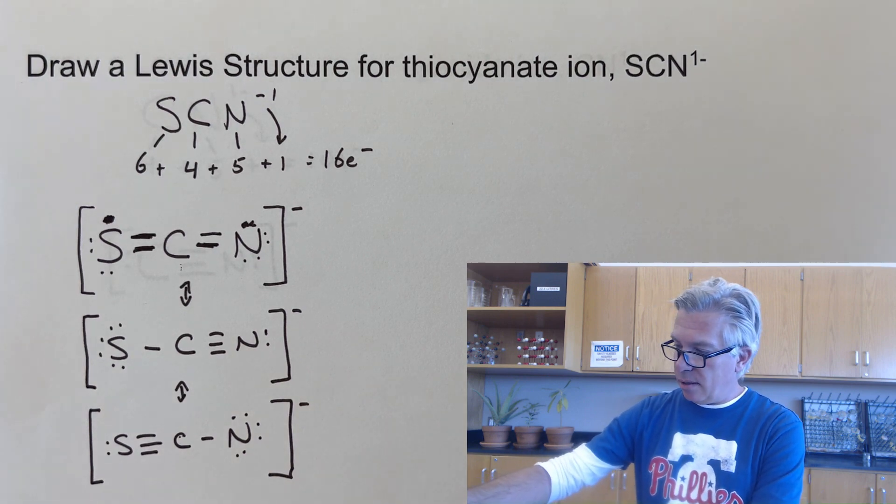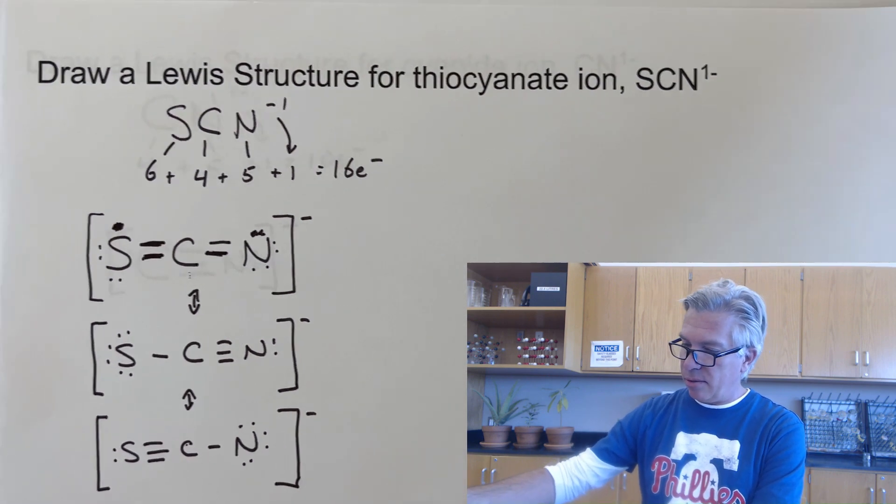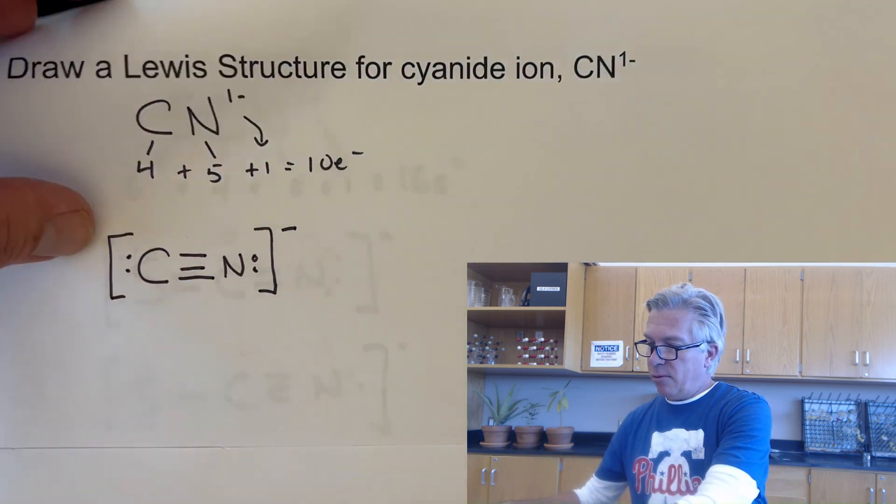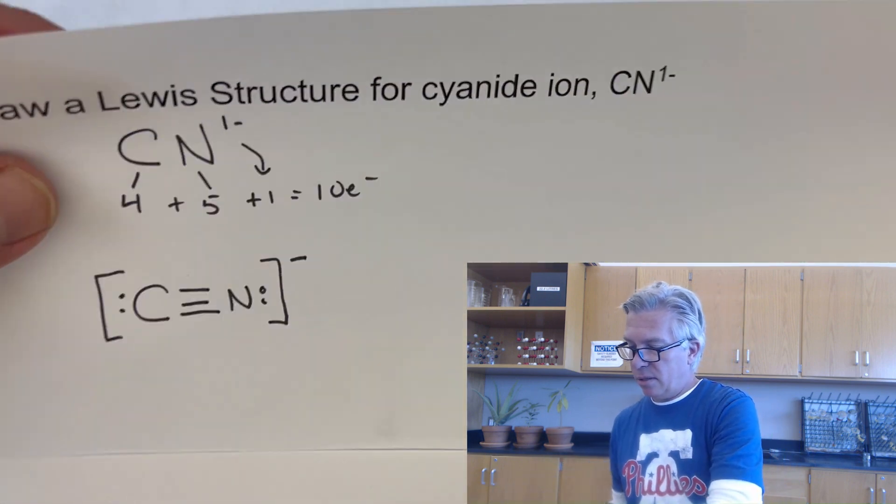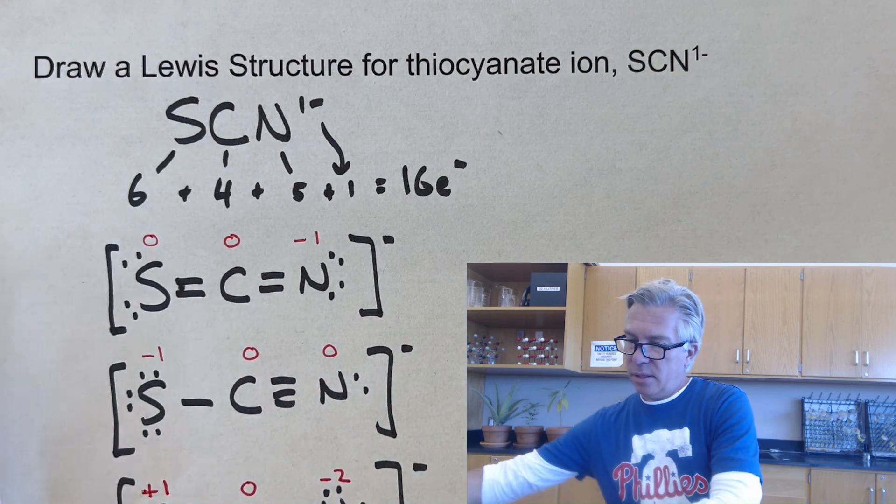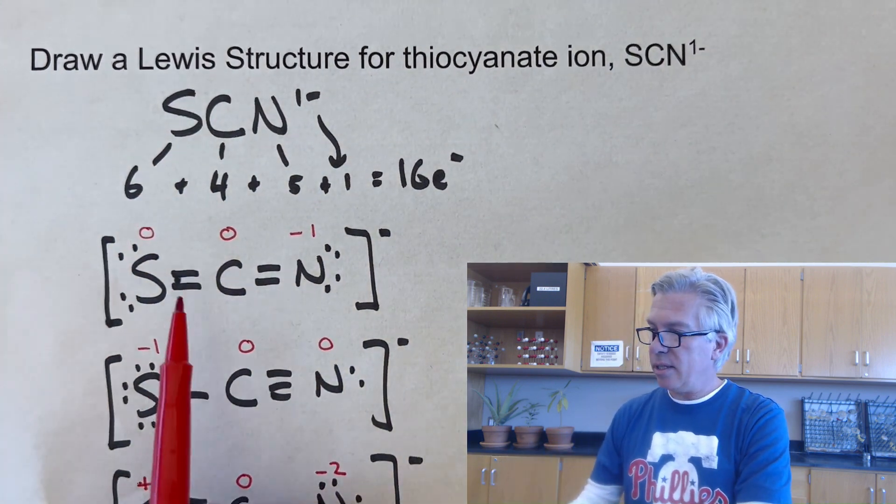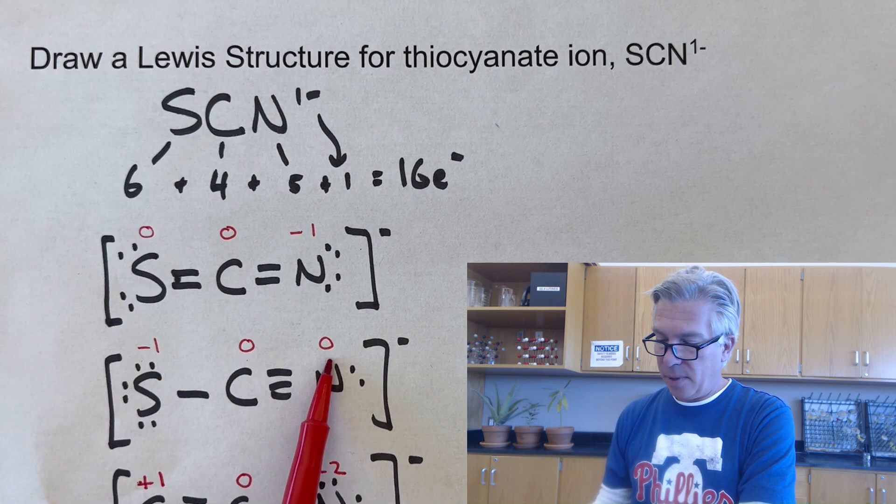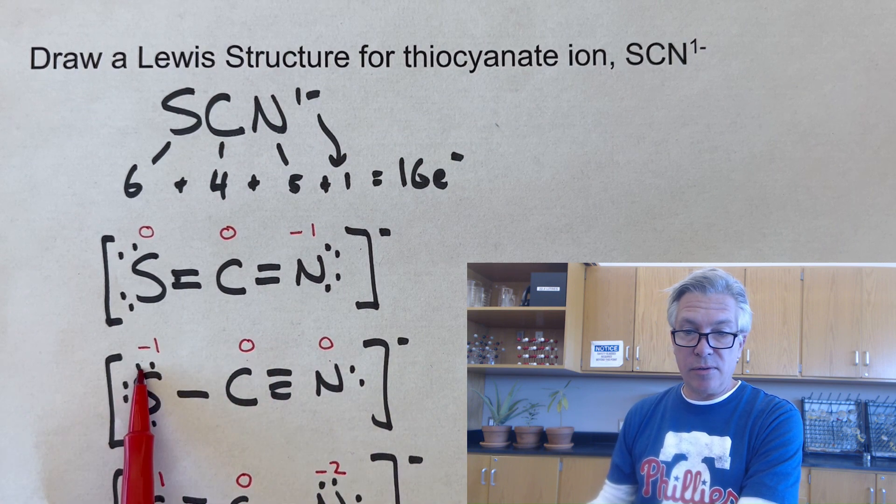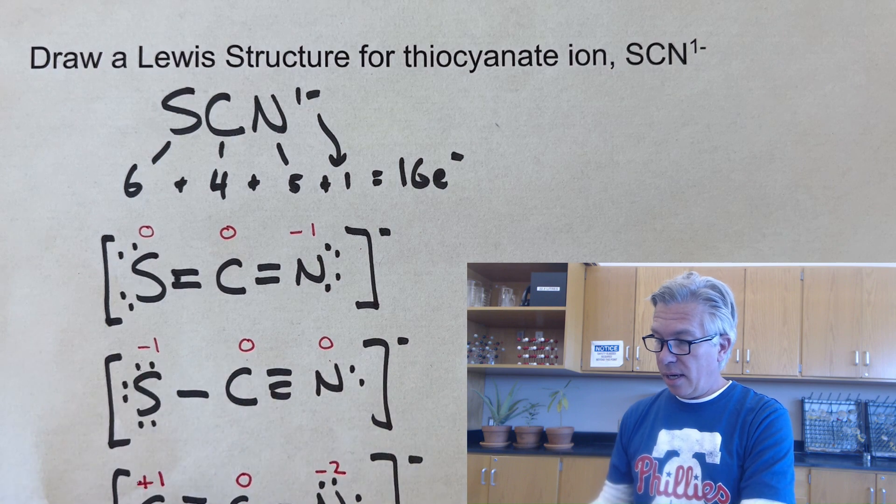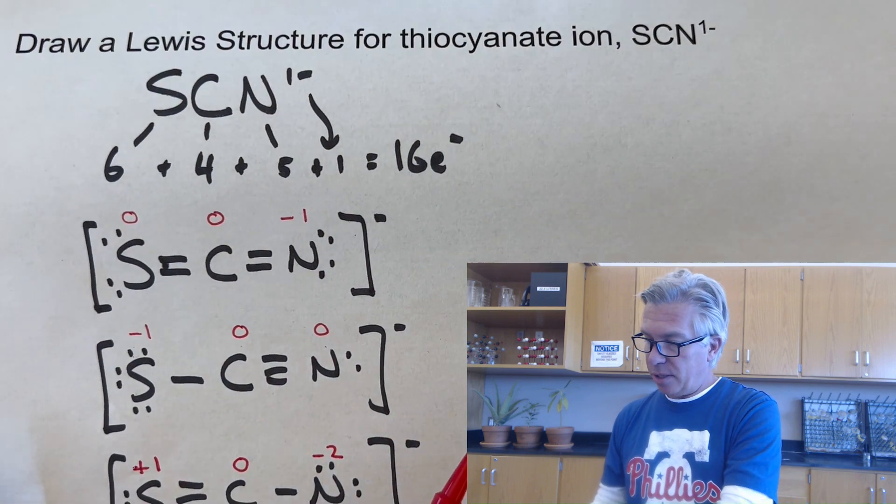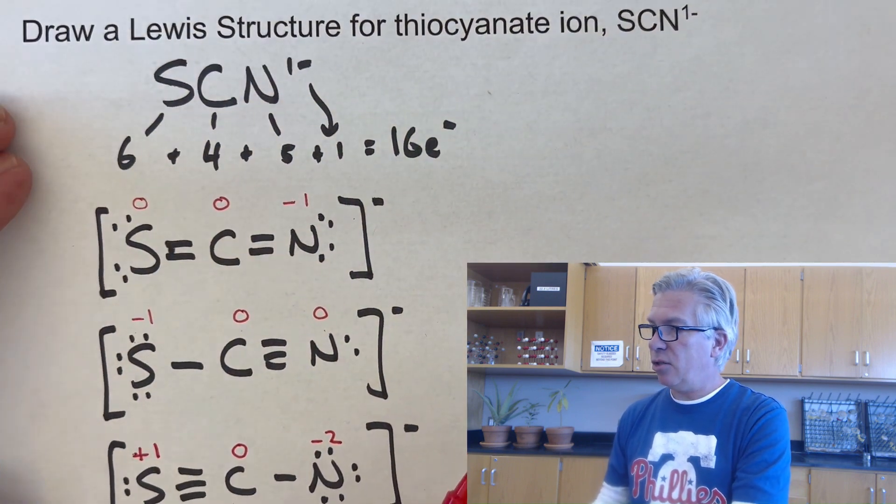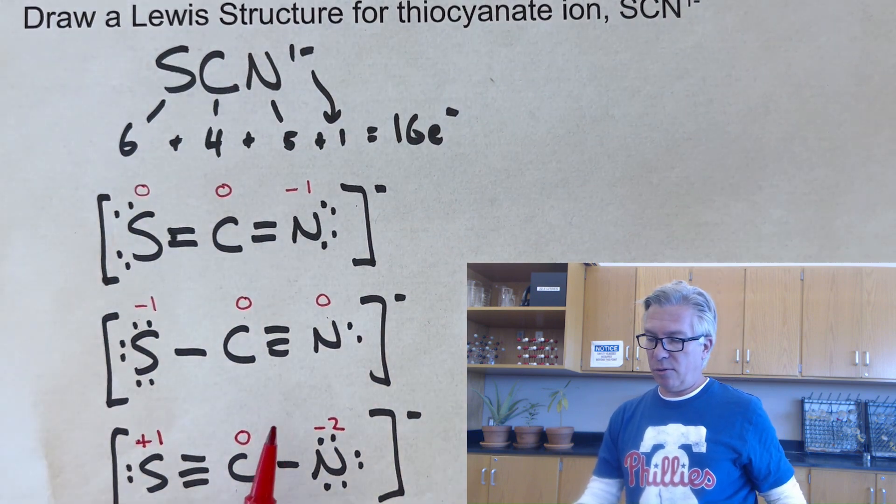Okay, so if you finished assigning your formal charges, and if you got a formal charge such as these, we already did the zero, zero, minus one version. This one is minus one, zero, and zero. The negative charges get swapped over to the sulfur because it had more electrons. And in the final one, we have plus one, zero, and minus two as our formal charges there.